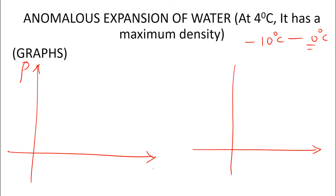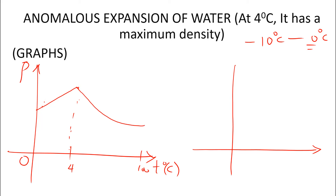That characteristic from 0 to 4°C, where it contracts before expansion, is what is called the anomalous expansion of water. Looking at the density-temperature graph: the density increases from 0 to 4°C, reaching maximum density at 4°C, then decreases after that. So from 0 to 4, as it contracts, the density increases while the volume reduces. At 4°C density is maximum, and after that it expands like any other liquid, meaning density decreases.